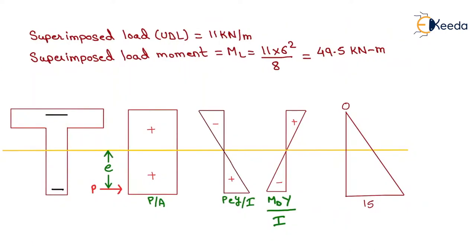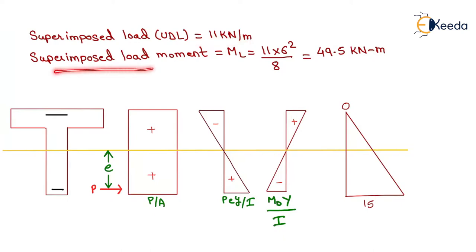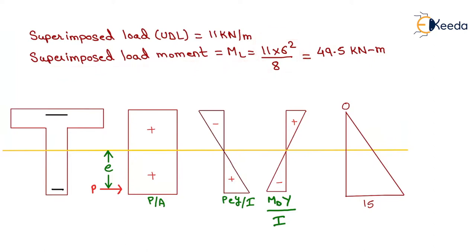The superimposed load UDL given in the question is 11 kN/m. The superimposed load moment ML = WL²/8, giving ML = 49.5 kN·m.